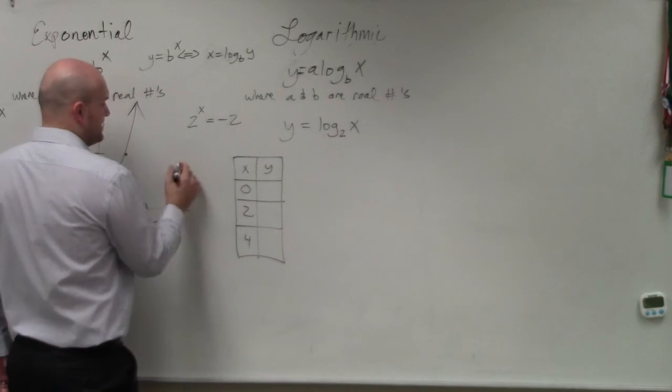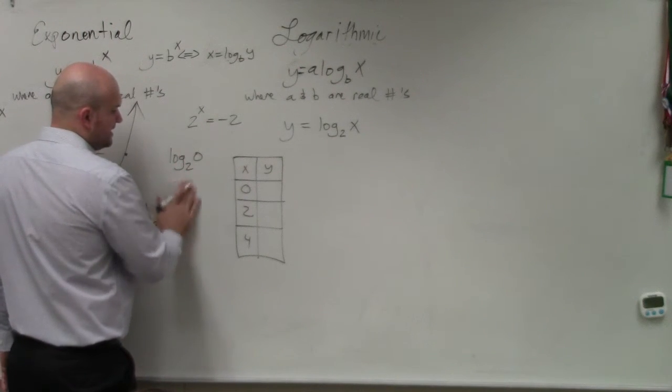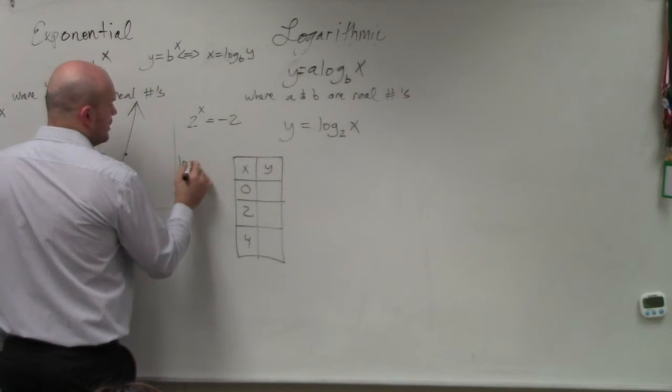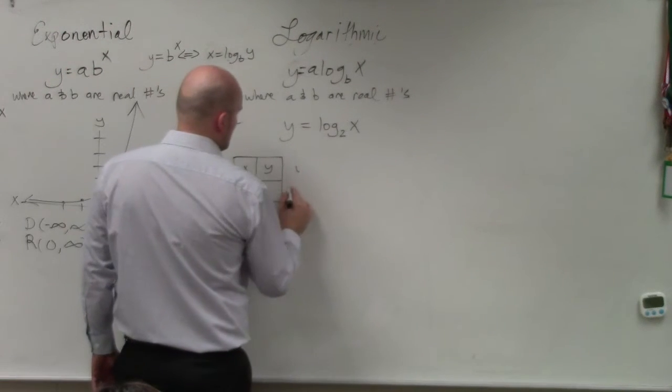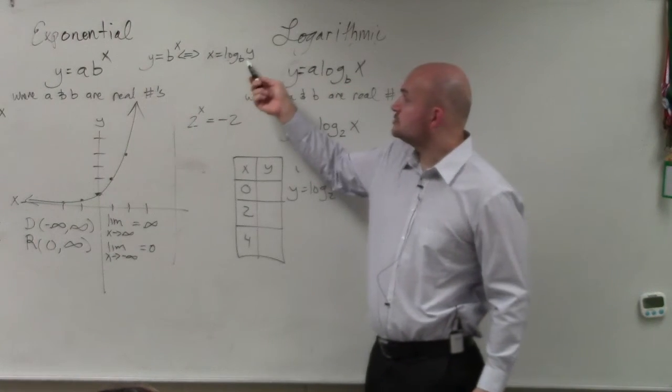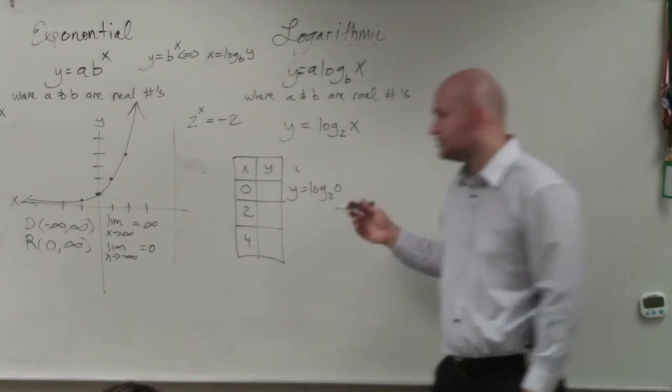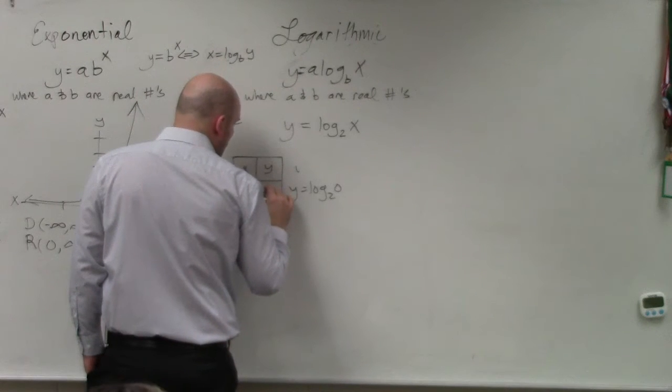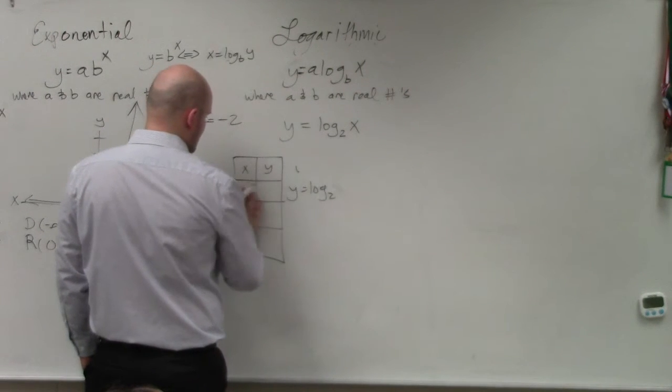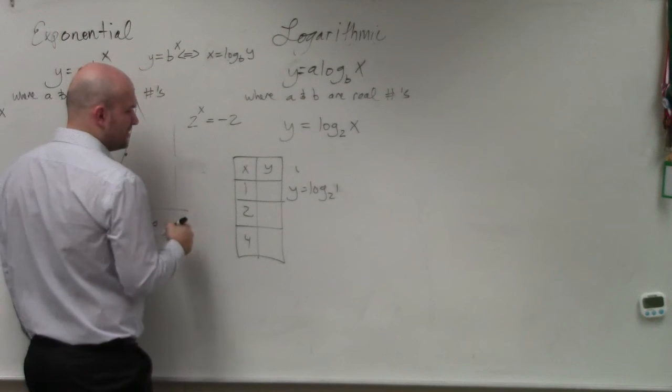When we're looking at the table, this is saying log base 2 of 0. So y equals log base 2 of 0. The logarithm is stating 2 raised to what number is going to give you this y? 2 raised to what number is going to give you 0? That's undefined. Sorry, that's supposed to be 1. 2 raised to what value is going to give you 1? That's 0.